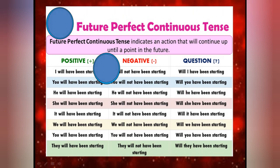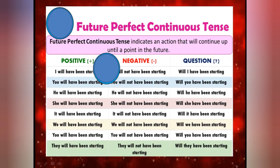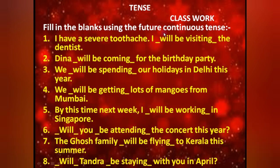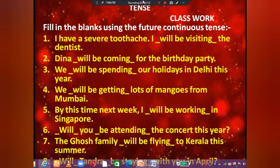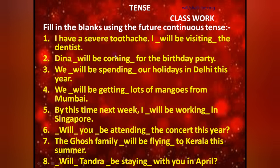Now we are going to start the exercise. The first exercise is fill in the blank using the future continuous tense. First of all, identify the tense and start filling the answer. Just write down the form: future continuous — what is the form? Will/shall plus be plus ing. So everywhere we have to use this only.